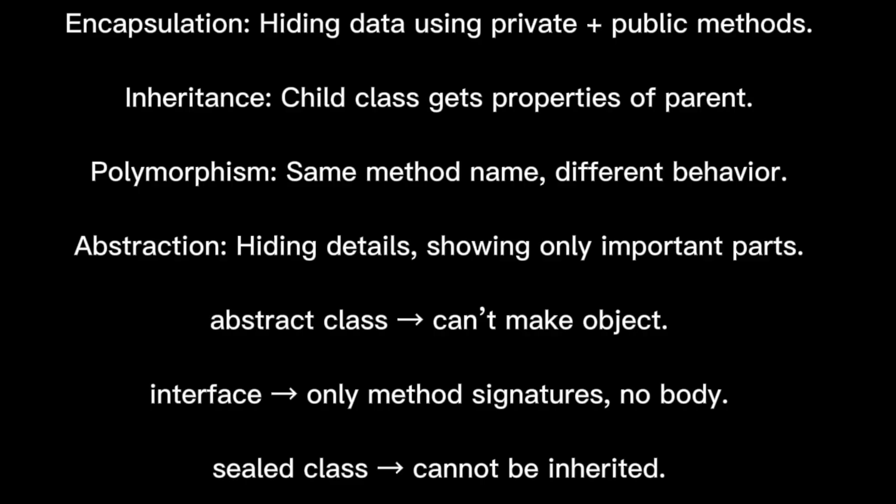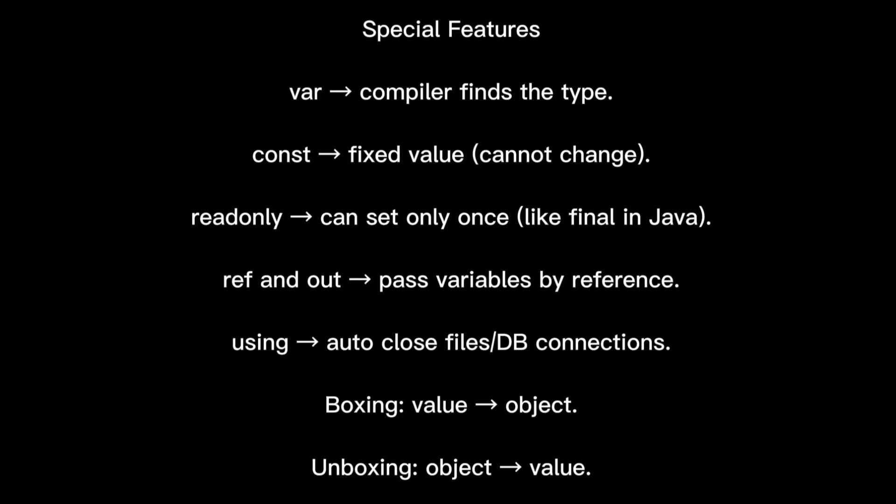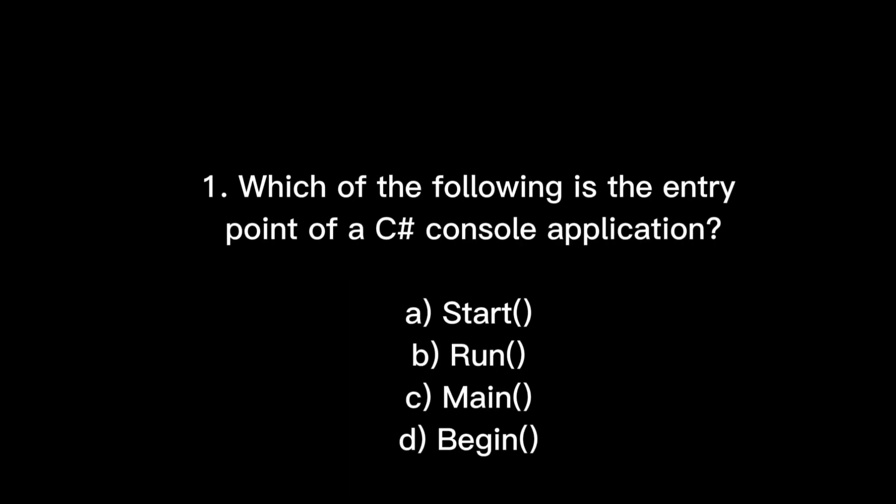Some special C# features: 'var' lets the compiler infer the type. 'const' is a fixed value that cannot be changed. 'readonly' is like Java's 'final' keyword — once declared, the value cannot change. 'ref' and 'out' allow passing variables by reference. 'using' is for auto-closing resources like database connections. Boxing converts a value type to object; unboxing converts an object back to a value type.